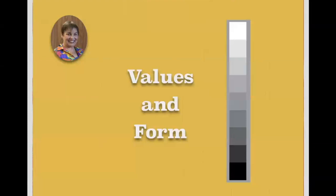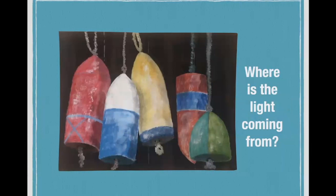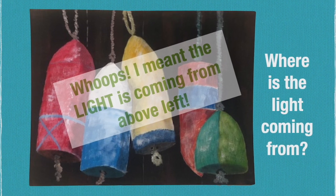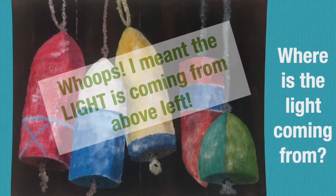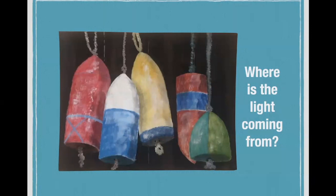We are going to look at values and form. Values are how you create form, and values are shades of gray from dark to light. Our first question is: where is the light coming from? We can see a little bit of shadow on the right side of some of these objects, and certainly on the bottom too, which tells us the light is coming from above and on the left. If we make the light a little bit stronger — the feeling of light and shadow — we'll get more of a feeling of three-dimensional form.